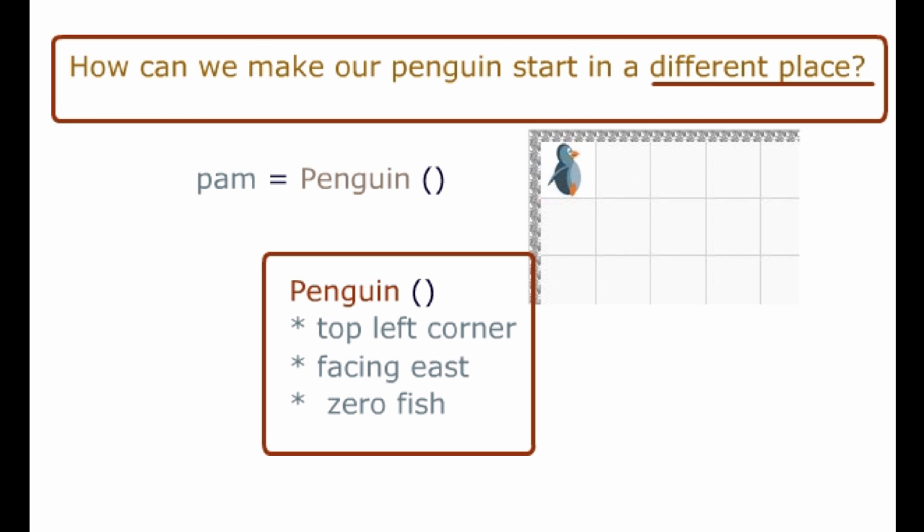So here's the basic premise for an argument. How do we make our penguin start in a different place? So far the default starting location for your penguin has been in row 0, column 0, as you see in this little depiction here, with the penguin facing east and having 0 fish.